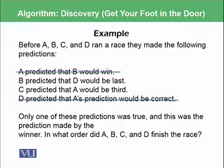We are left with two statements: B predicted that D would be last and C predicted that A would be third. So if A predicted that B would win, this statement is false because of our first logic. This means that the second statement, B predicted that D would be lost, cannot be true as well because the statement made by the winner is actually the true statement. So this statement is wrong.